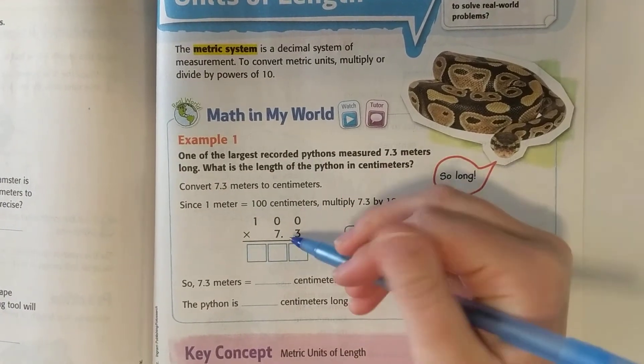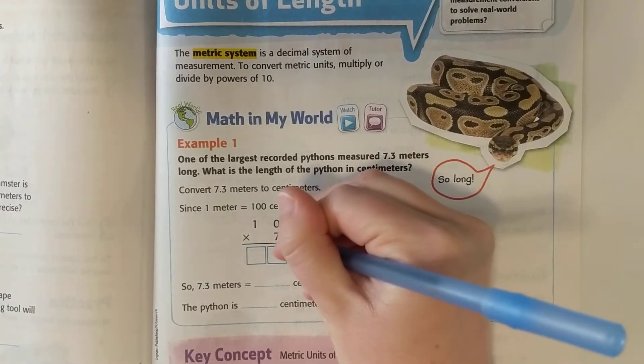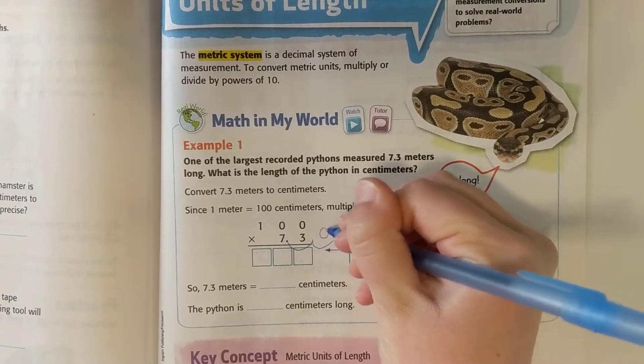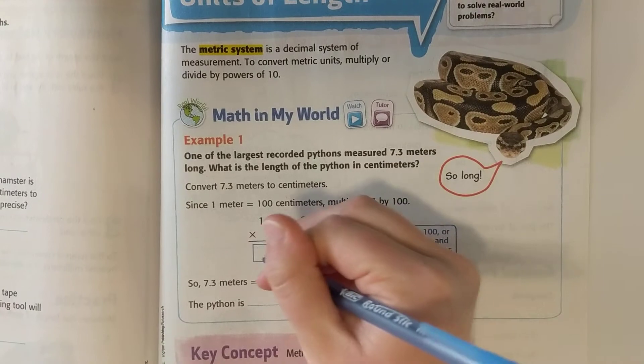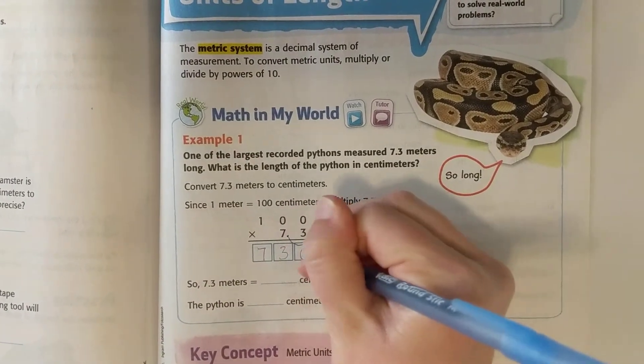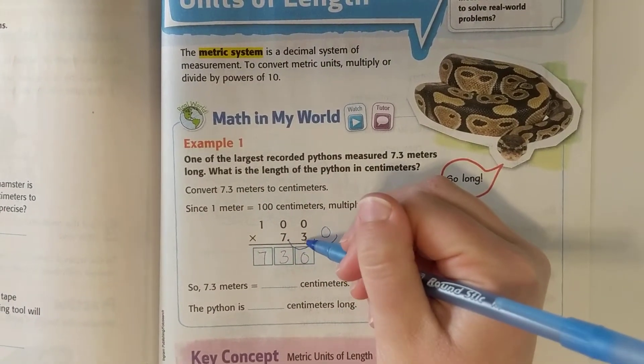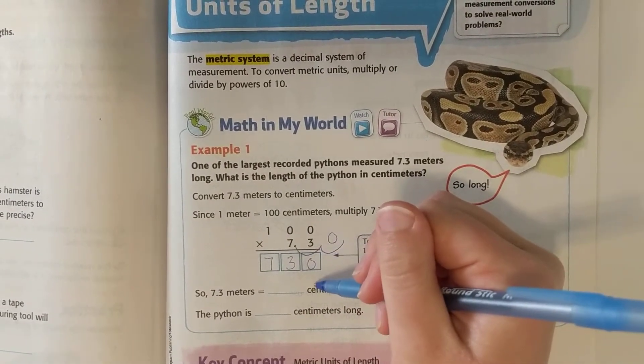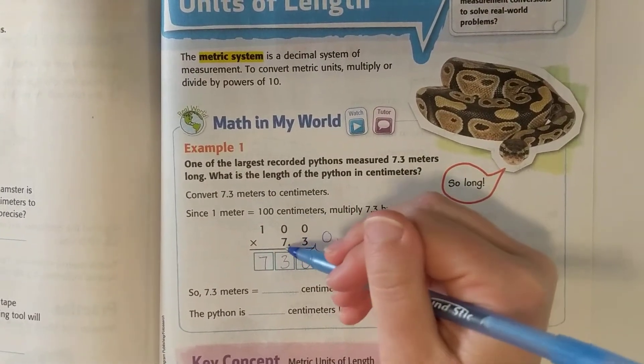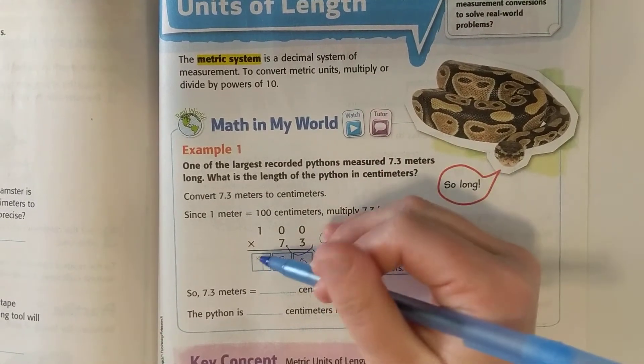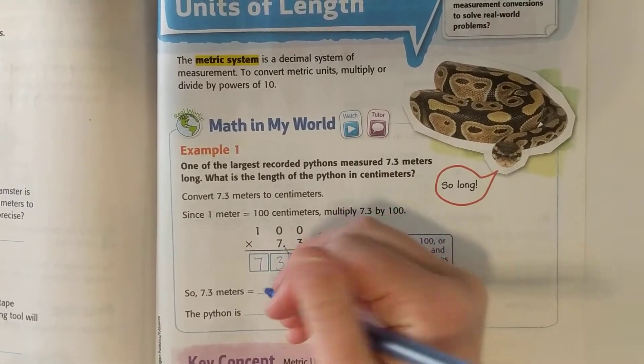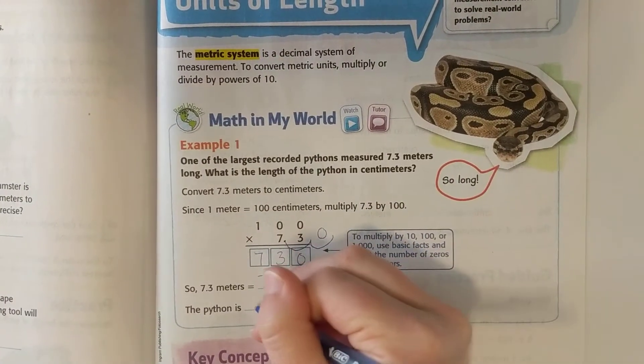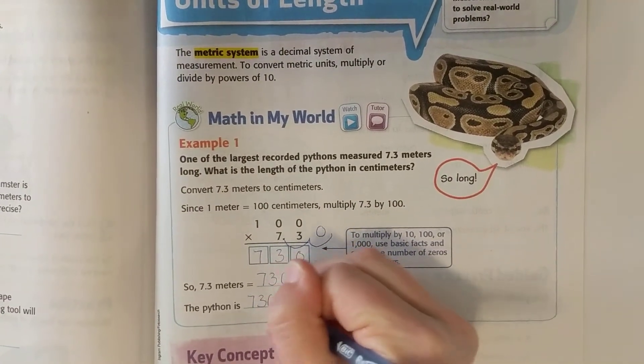I have two zeros here and I'm going to move it two times to the right. I have this weird gap here, a zero fills it in. So my answer is 730. You would get the same thing if you did the traditional multiplying. Our answer is 730 centimeters long. So the python is 730 centimeters long.